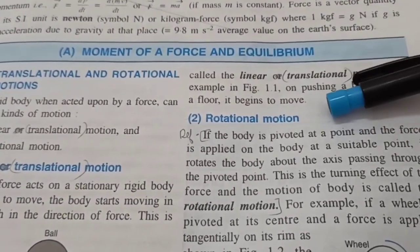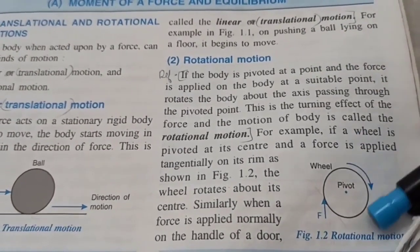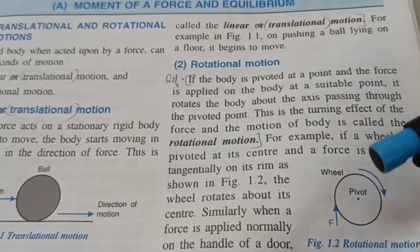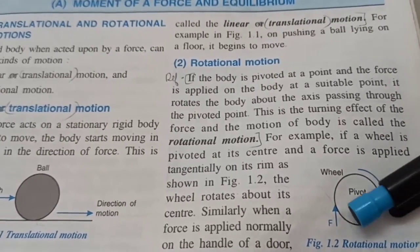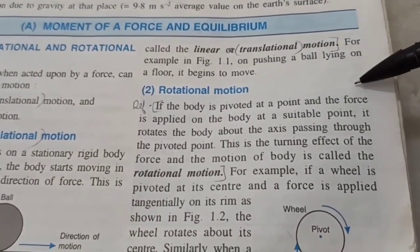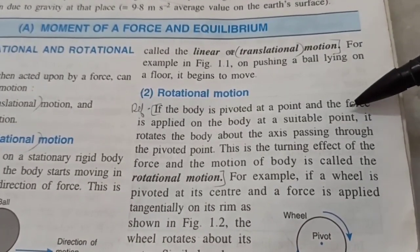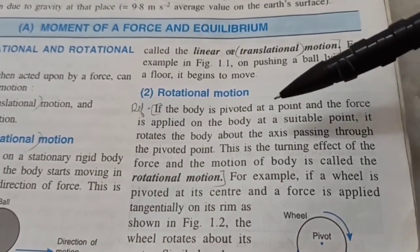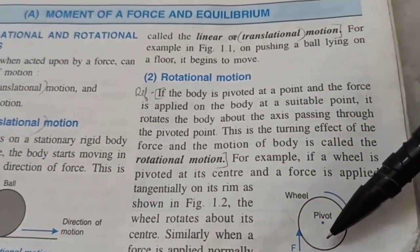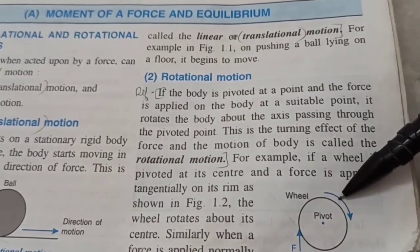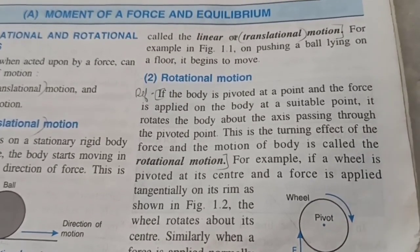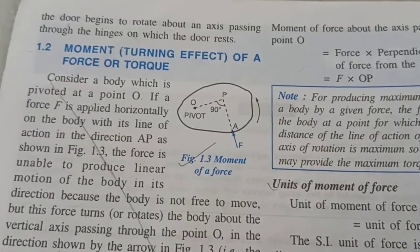More important for this chapter is understanding rotational motion. There is a force applied, a pivot which is a fixed point, and the axis of rotation passes through it, producing rotation. When a body is pivoted at a point and a force is applied at a suitable point, it rotates about the axis. This turning effect of the force can be measured with moment of force.